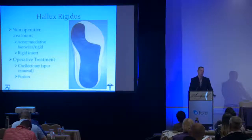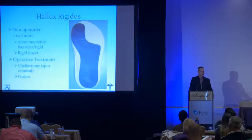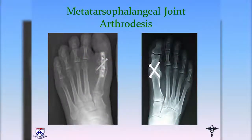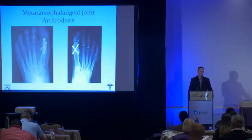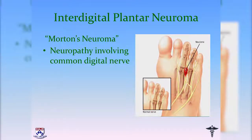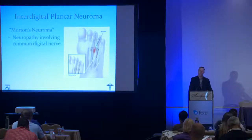For operative treatment of hallux rigidus: if the joint surface is relatively preserved, we remove the dorsal spur (cheilectomy). Joint replacement options exist but lack good long-term data; a synthetic implant has shown some promise but also has questions about effectiveness. Fusion is the other option. Patients can return to running after fusion; for females I counsel that nothing more than a two-inch heel is advisable post-fusion, which some patients won't accept, and then we consider other options.